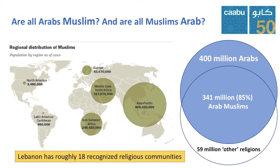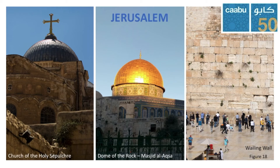Lebanon is one of the most religiously diverse nations in the Arab world, with roughly 18 recognised religious communities. The Arab world hosts sacred spaces for all three major world religions. One of the most significant is the city of Jerusalem, where you will find the Church of the Holy Sepulchre — where Christians believe Jesus was crucified — as well as Masjid Al-Aqsa, the third holiest site in Islam where Muslims believe the Prophet Muhammad ascended to the heavens, and the Wailing Wall, believed to be the last remaining wall of Herod's temple and a place of prayer and pilgrimage for Jewish people.